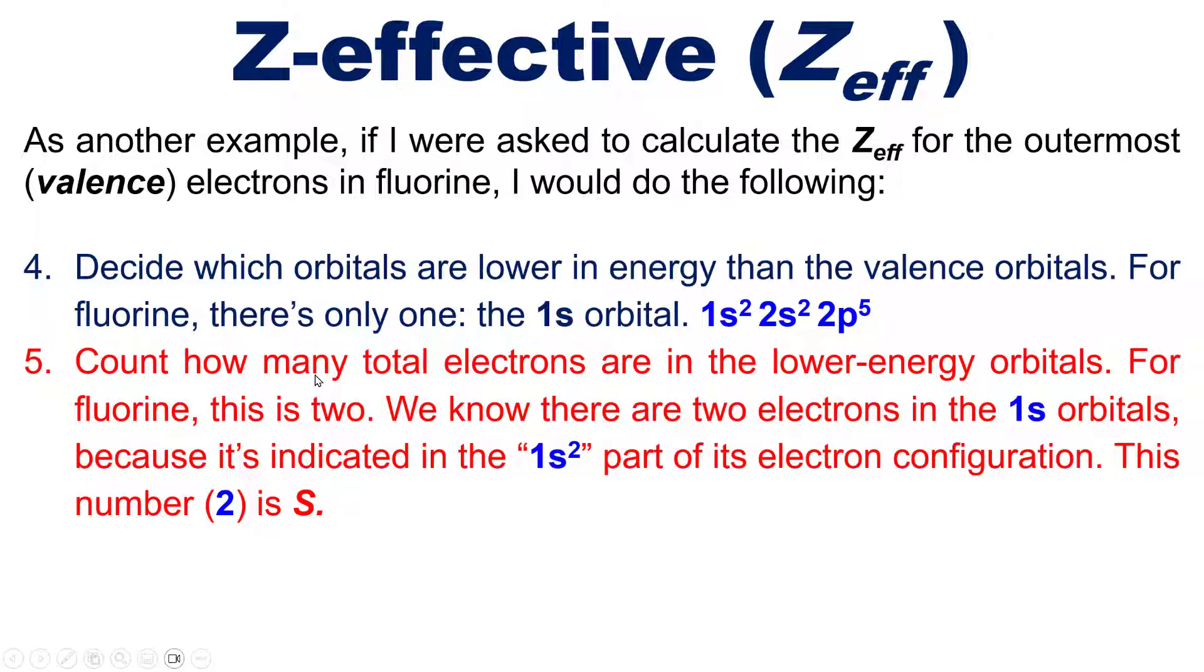Next, I count how many total electrons there are in that lower energy orbital. For fluorine, this is two. We know there are two electrons in the 1s orbital because it's indicated in the 1s², that little two superscript there. That's the number of electrons in that 1s orbital.